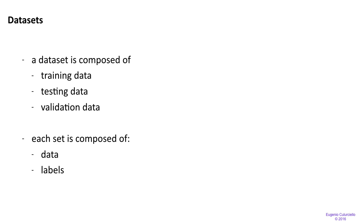Typically, if we have a thousand images, we take about 800 as training data — we want most of it to train our model. We keep 100 aside as validation data, which we use to slightly adjust the model parameters and validate them again. We don't use the testing data very often; it's supposed to be used in the last step when we really want to test our final solution. In practice, it's hard to make a clear distinction between validation data and testing data, and people often blur that line.